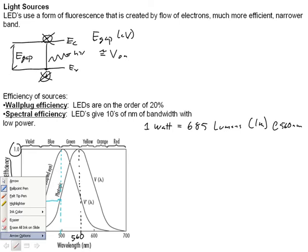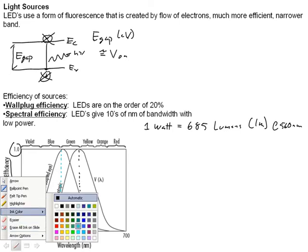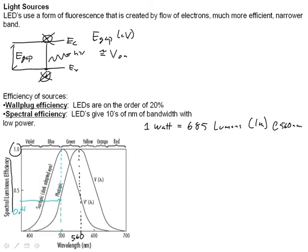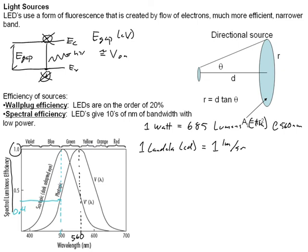Unfortunately it gets even more complicated than this because one candela, which is given in terms of CD, that's the abbreviation for it, is one lumen per steradian. And remember, steradian is a unit of solid angle, and so we're going to have to know how focused or the angle our LED emits into to figure any of this stuff out at all.